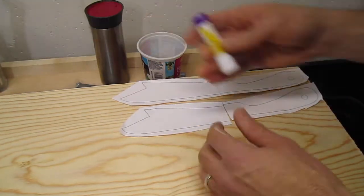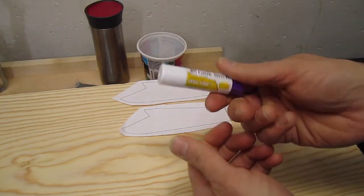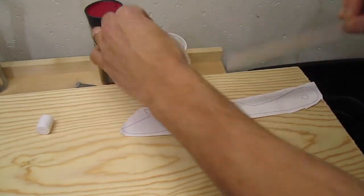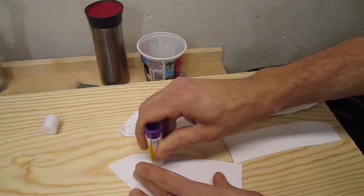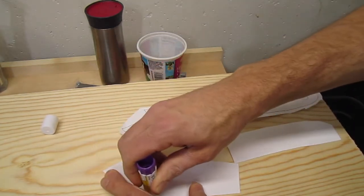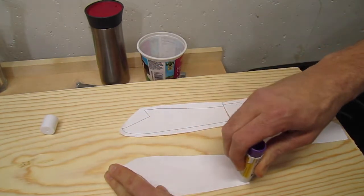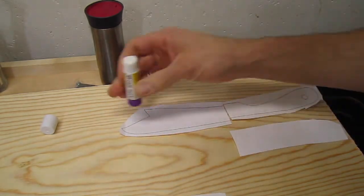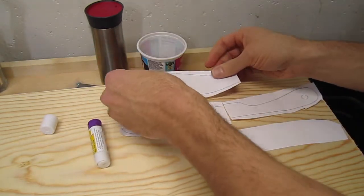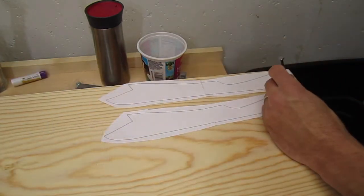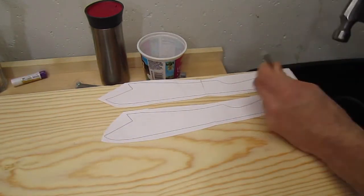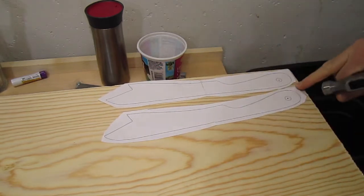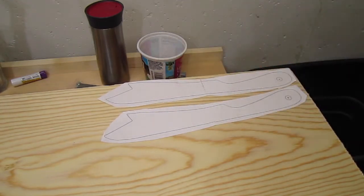I'm just going to glue these down with a glue stick. You can use that spray adhesive but the glue stick actually works quite well. And it's a lot easier to get off because you can just put it where you need it. You don't have to put a ton of it on. Before I cut these out I'm just going to mark the center of these holes because the pattern will probably come off while I'm cutting out on the scroll saw.